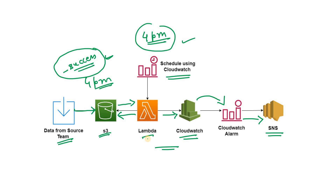I will show you a simple Lambda code which searches for a file in S3 and fails if it cannot find it. In CloudWatch it will display as a metric, so one month later if the business team wants a dashboard showing how many days data came on time versus not, you can simply show the CloudWatch visualization. In this demo I will not use the success file but rather look for a simple CSV file to run the experiment.